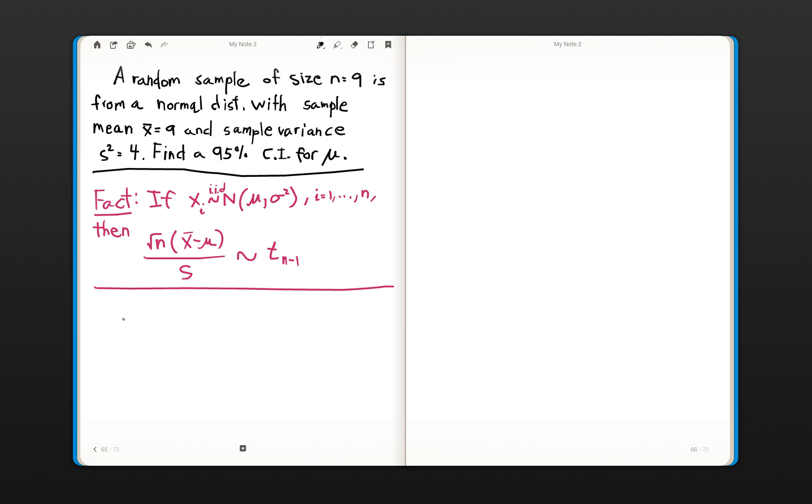Since we are forming a 95% confidence interval, what we have here is that alpha is equal to 0.05, which means that our alpha over 2 is equal to 0.025, which then gives us our t value. Of course, when you're dealing with a t distribution, you have a parameter that you need to take into consideration, and that's the degrees of freedom, which is just one less of your sample size.